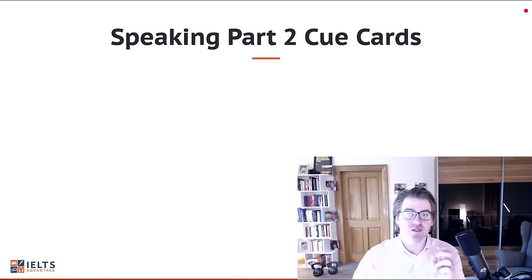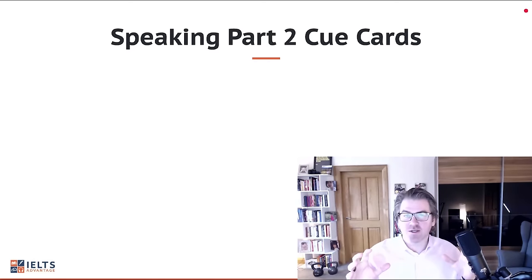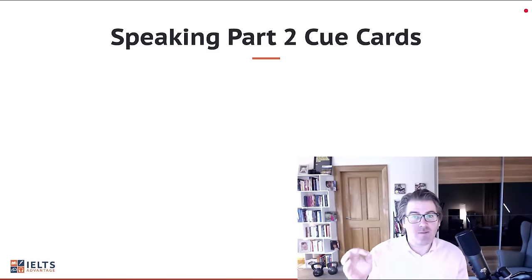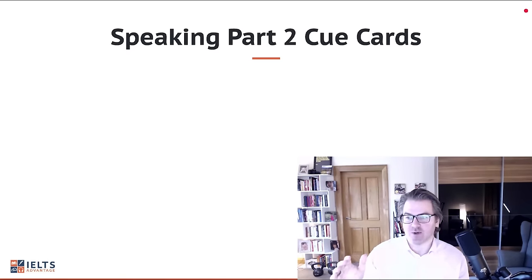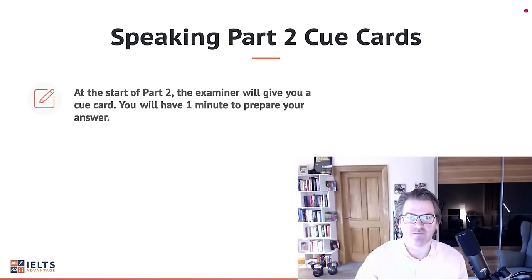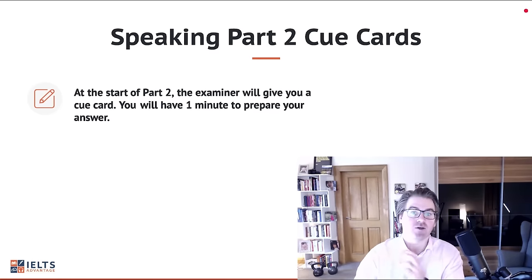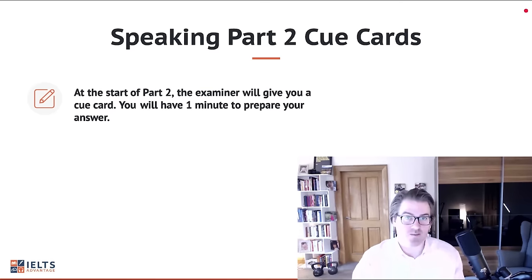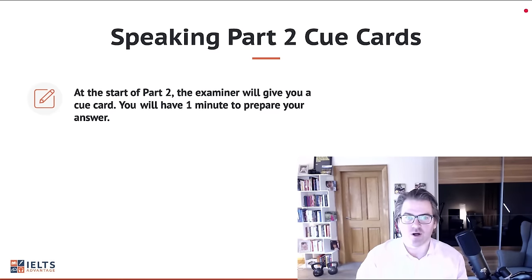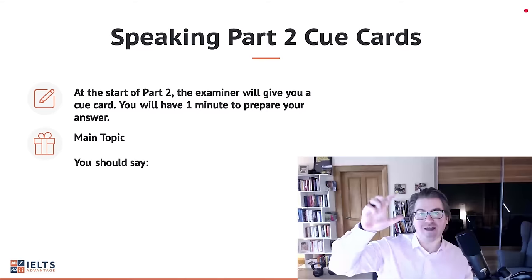First, we need to look at part two cue cards, particularly the format of those cue cards, because this is going to give us the information we need to understand what the main problems are and what this little secret is. It's also going to help you understand and implement our strategy. At the start of part two, the examiner will give you a cue card, and you'll have one minute to prepare your answer. Then you'll be expected to speak for up to two minutes.